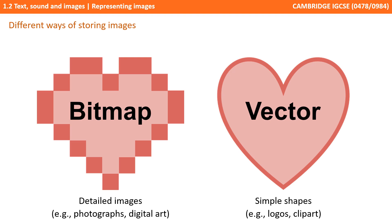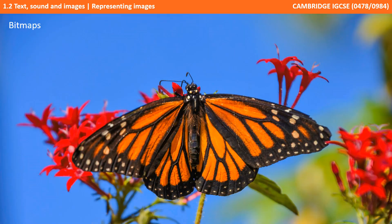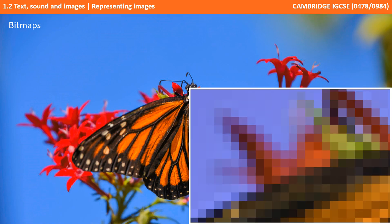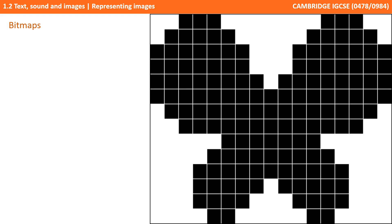In this video we're only considering bitmap images in more detail, as those are the only images you need to be aware of for your exams. Here is a typical bitmap image of a butterfly. If we zoom in, you can see the image is made of lots of different coloured pixels — this is a bitmap.